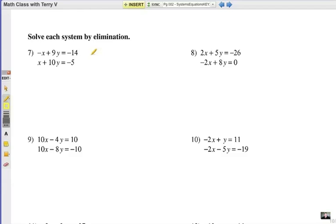What we simply do is look for the X's and the Y's that are exactly the same. In this case I have a negative X and a positive X, negative 1 and positive 1 X's. If I added those they would drop out and those X's would disappear. Over here we have a positive 2X and a negative 2X, those are opposites and would drop out.